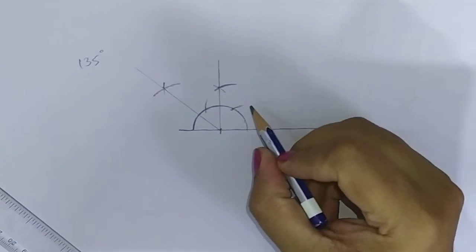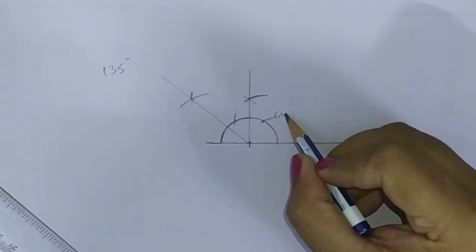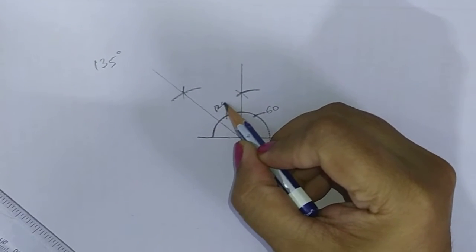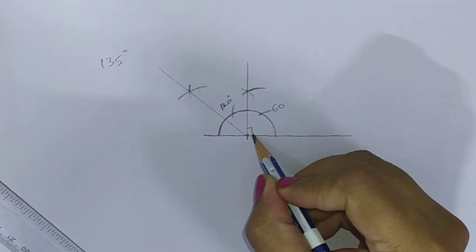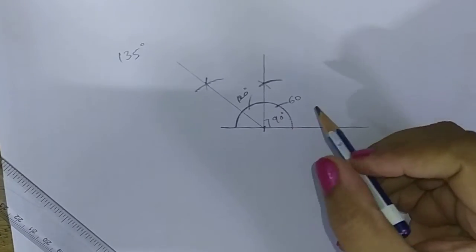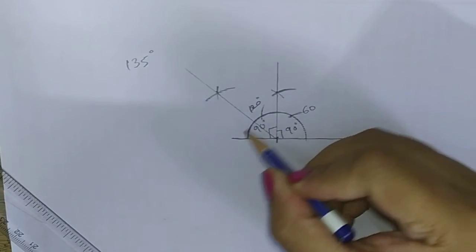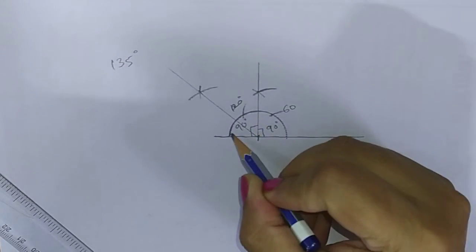What we have done: first we have taken the arc for 60 degrees, then for the 120 degrees. Here we got 90 degree angle. Then this side is also 90 degrees. If we bisect this side, we get 45 and 45.